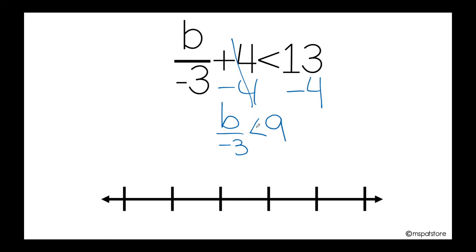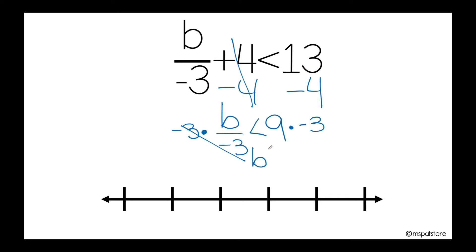As you can see, now I need to multiply by a negative number. That's why you need to change the direction of your inequality symbol. So I'm going to cancel this out — b is no longer going to be less than.